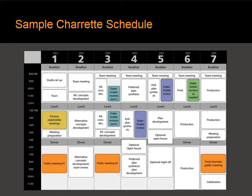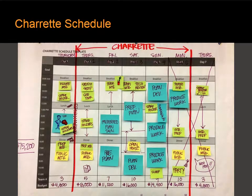Now it's time to create your charrette schedule for the case study. Here we see again the seven-day prototypical charrette schedule with the meetings shown in color. Here we see a charrette schedule created by a team in an NCI course, made up of post-it notes of different colors.